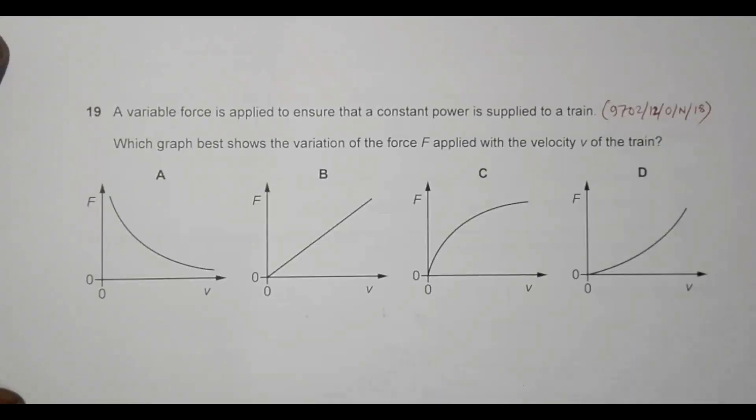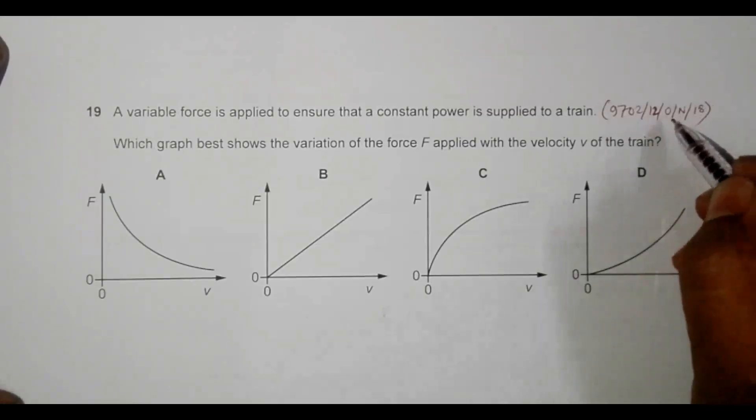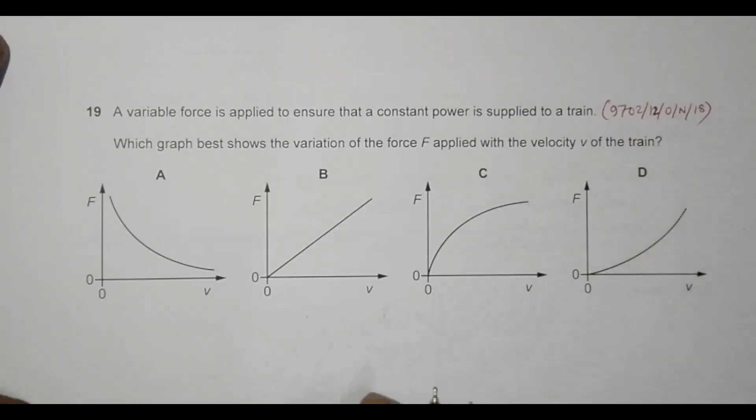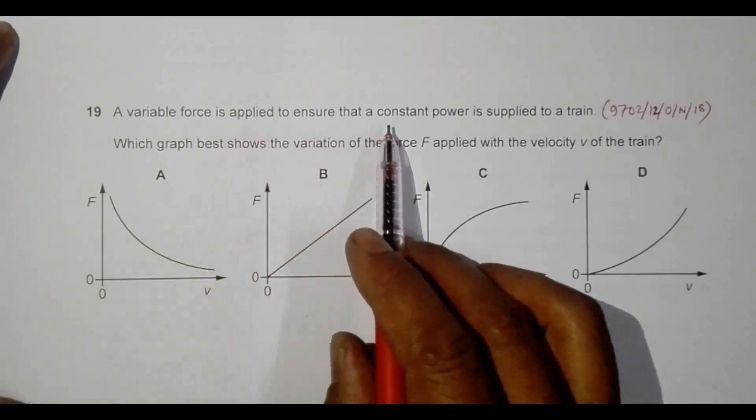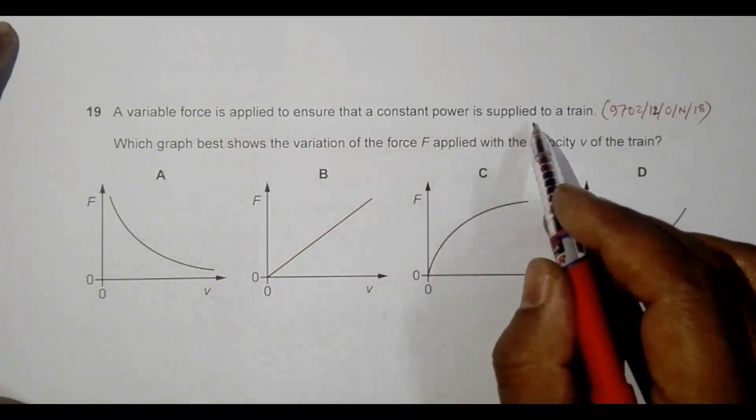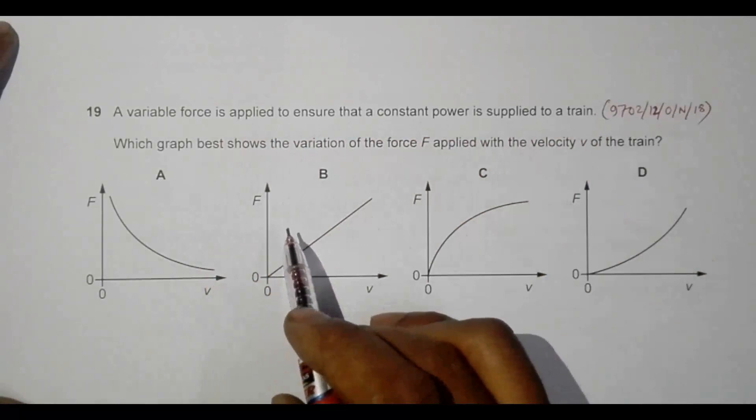Hello folks, this is question 19 from the 2018 paper 1, October-November. It says that a variable force is applied to ensure that a constant power is supplied to a train.